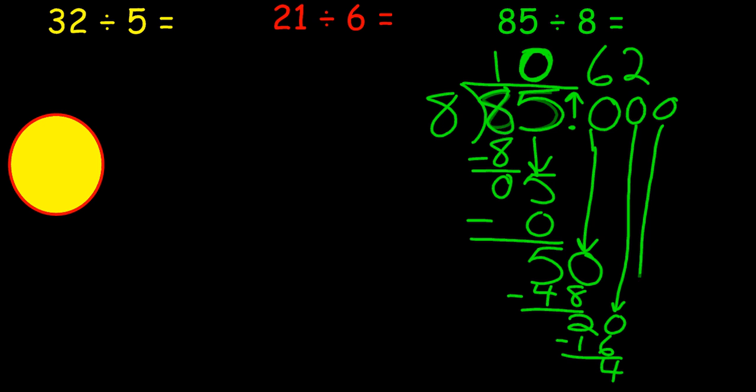Again, bringing the 0 down. And finally, how many times does 8 go into 40? Well, it goes into it 5 times. 5 times 8 is 40, so I would have 0 remaining. Don't forget to bring that decimal straight up, and then check your work.